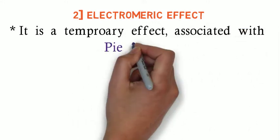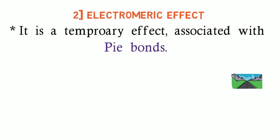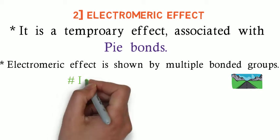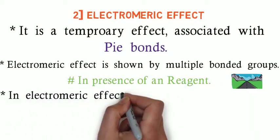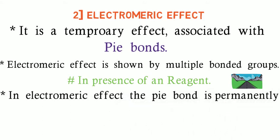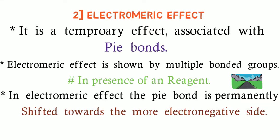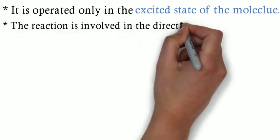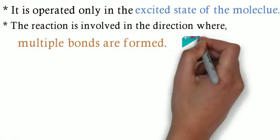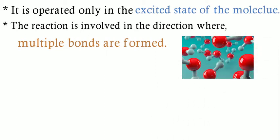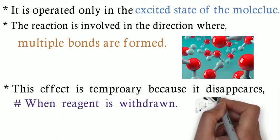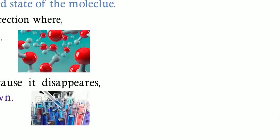The next one is the electromeric effect. It is a temporary effect and it is associated with pi bonds. The electromeric effect is shown only by multiple-bonded groups in the presence of a reagent. In the electromeric effect, the pi bond is shifted towards the more electronegative side. It is operated only in the excited state of the molecule. The reaction involved will be in the direction where the multiple bond is formed. This effect is temporary because it disappears when the reagent is removed.